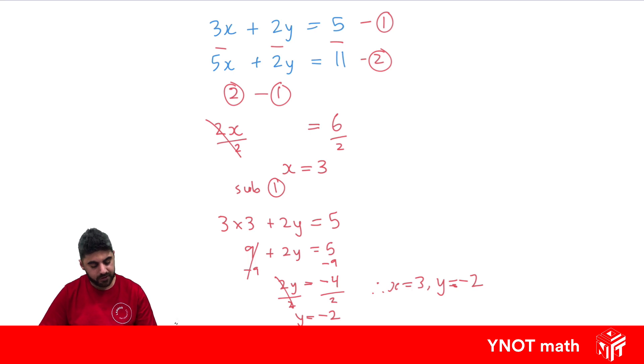So graphically, these two straight lines would intersect at (3, minus 2).